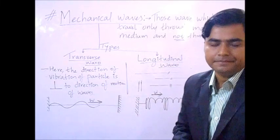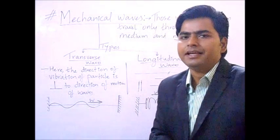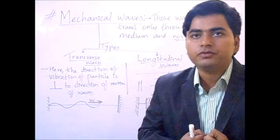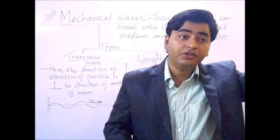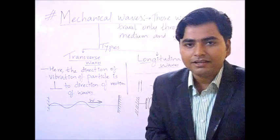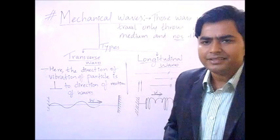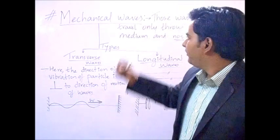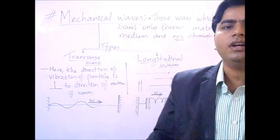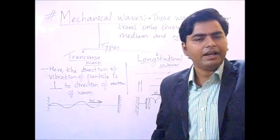Mechanical waves — what is it? We have learned that waves are basically two types: electromagnetic waves and mechanical waves. Electromagnetic waves are those waves that can travel from vacuum. Mechanical waves cannot pass through vacuum, like sound waves — they cannot pass through vacuum. So mechanical waves are those waves which can only travel through material mediums like solid, liquid, or gas. They cannot travel through free space or vacuum.